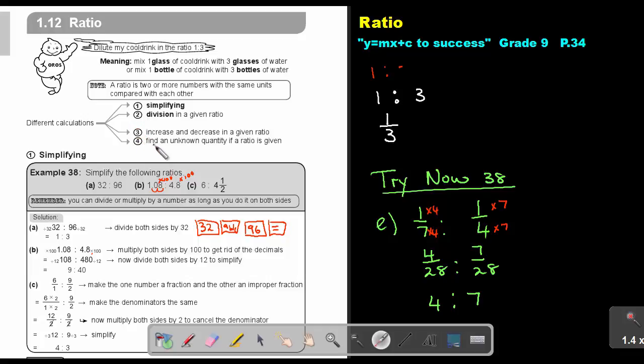This is number one sums. Number two, division. Three, increase, decrease. And four, they will not give you the total. They will ask you one of the outcomes. So find an unknown quantity if a ratio is given. So they will give you one of the outcomes and you must find the other outcome.